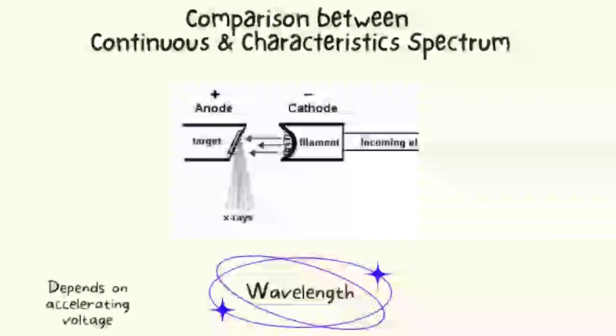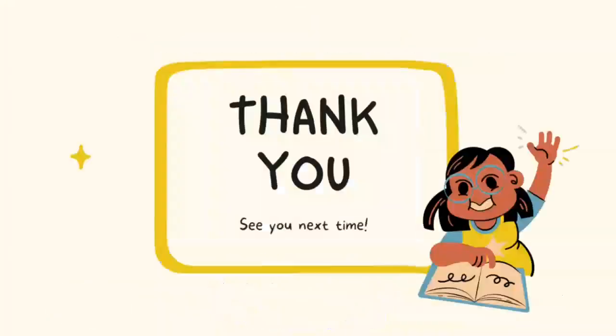The wavelength of the continuous spectrum depends on accelerating voltage, while the characteristic spectrum depends on the target material.